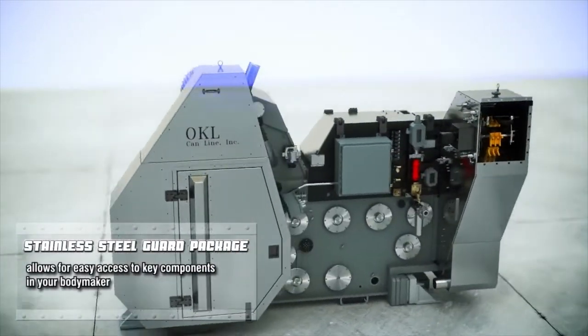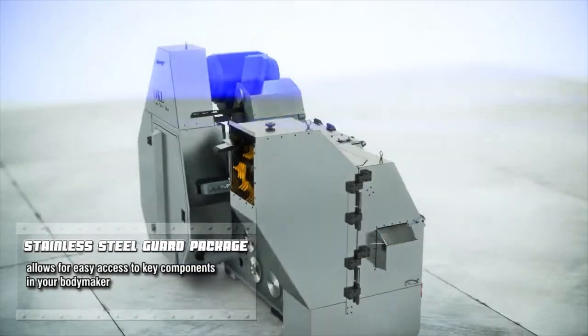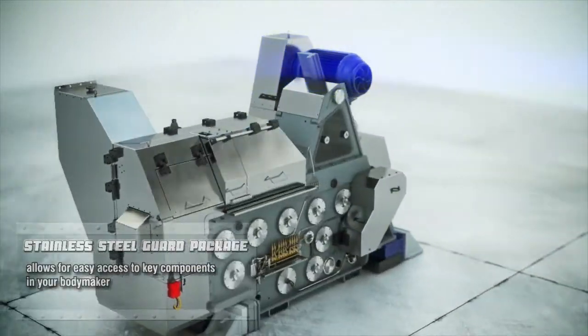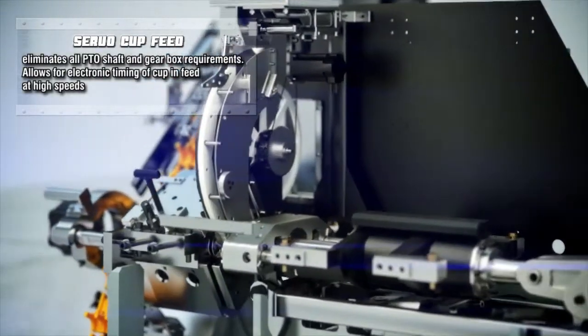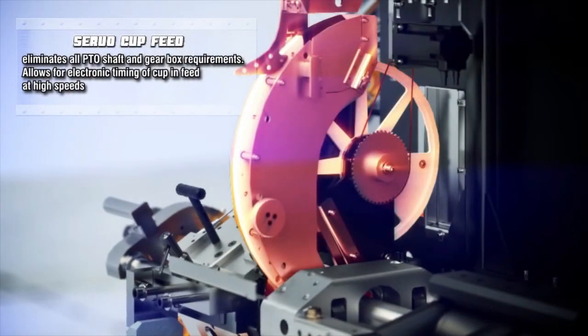The stainless steel guard package allows for easy access to key components in your body maker. Our servo cup feed and can discharge eliminates all PTO shaft and gearbox requirements. This allows for electronic timing of cup feed at high speeds.